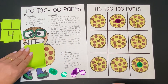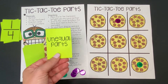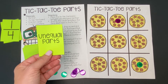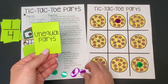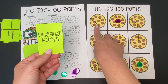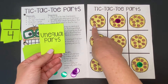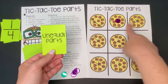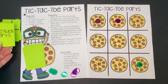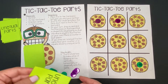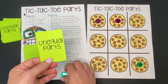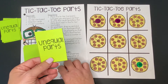Then it's our turn. Unequal parts! That means we get to choose one of the pizzas on here where the parts are not equal and we'll claim that one. We're trying to get three in a row, so this unequal one where it's three pieces but they're not equal — that's probably a good one for us, because three in a row is our goal with tic-tac-toe. Then our partner gets to go — they also got unequal parts. They're going to go right here because that's the only one left.